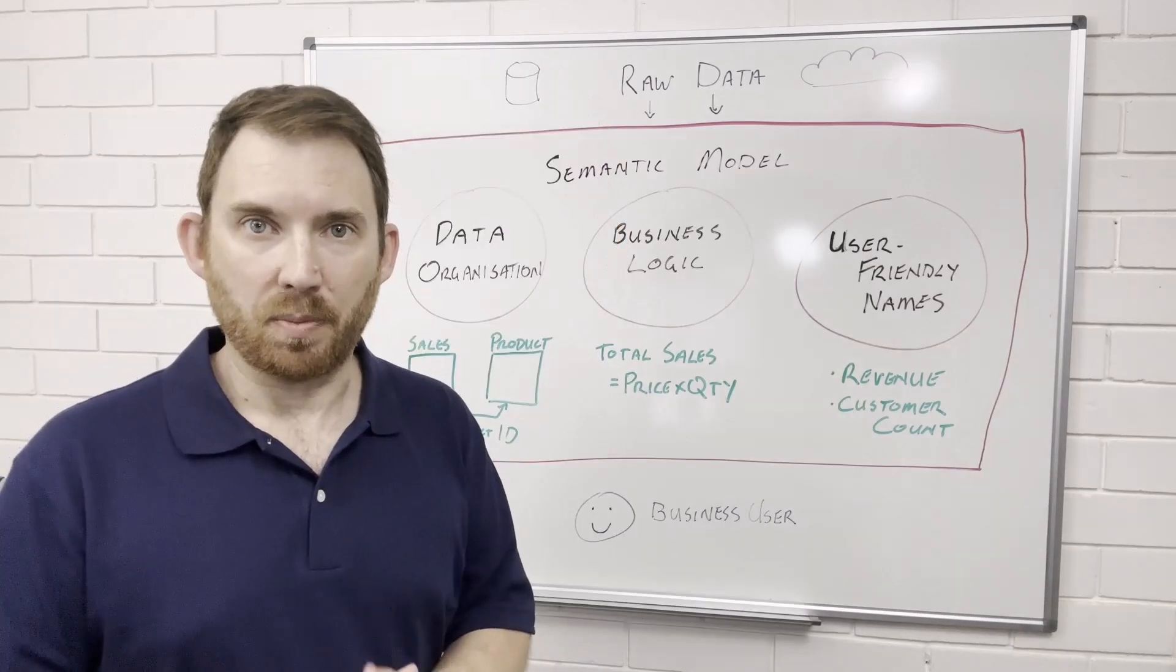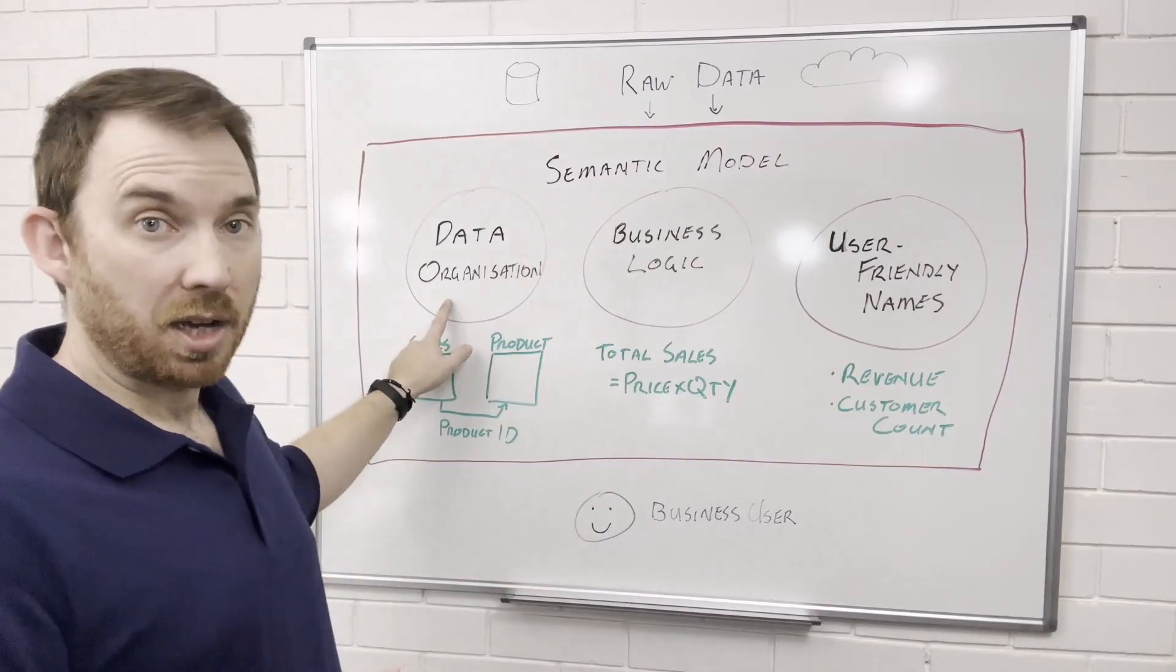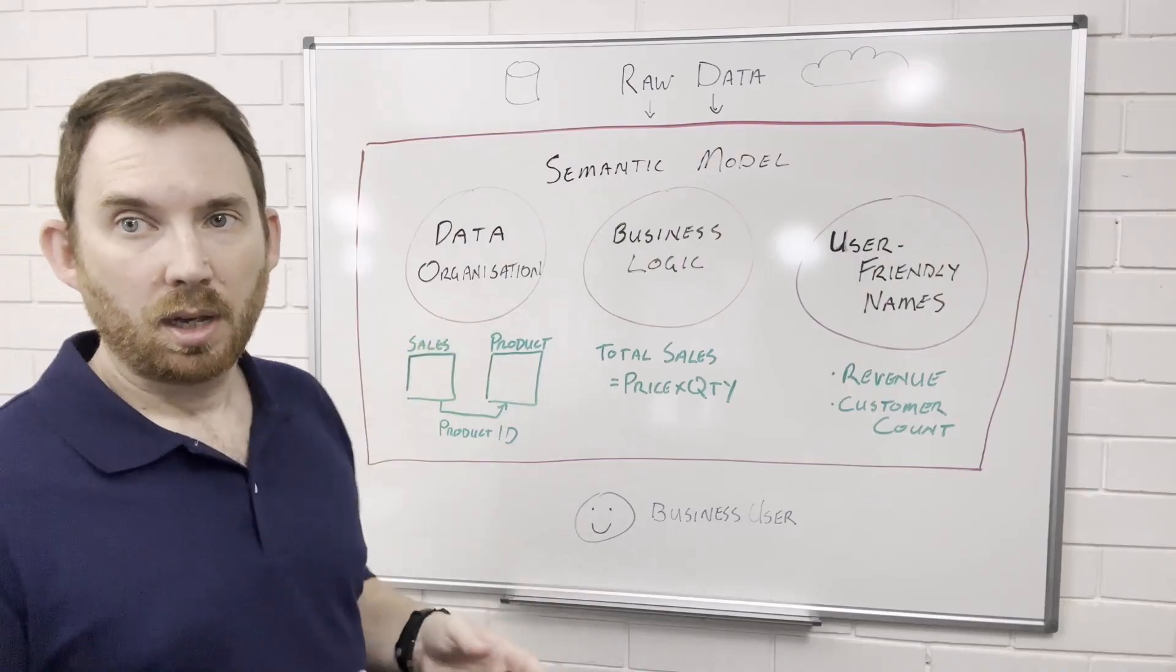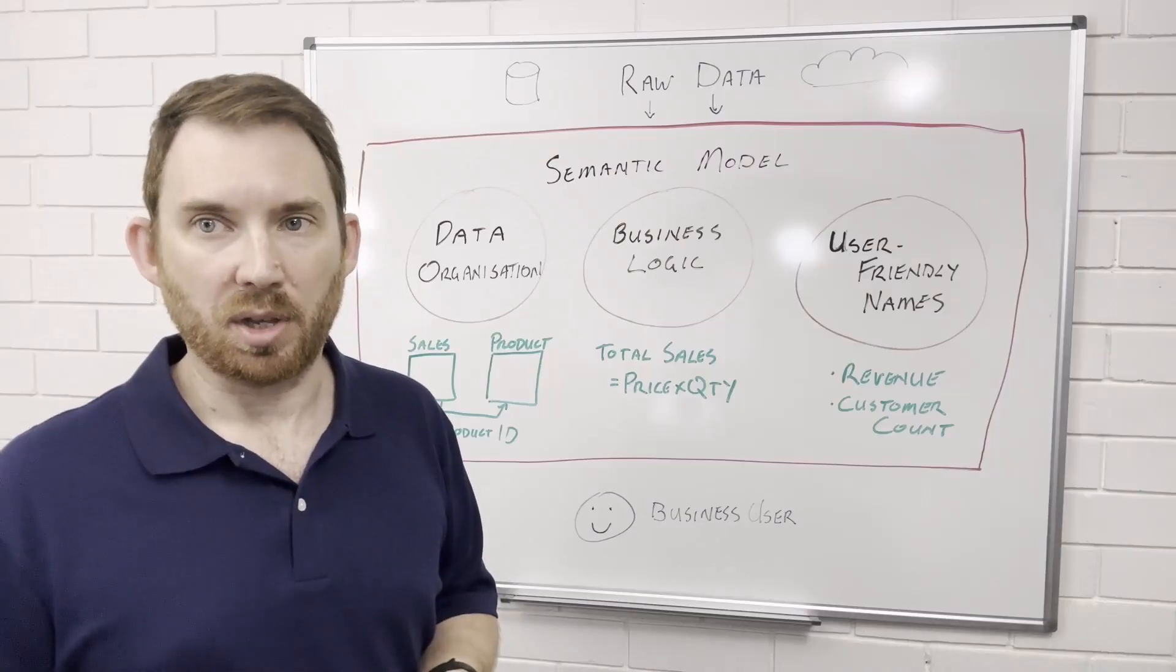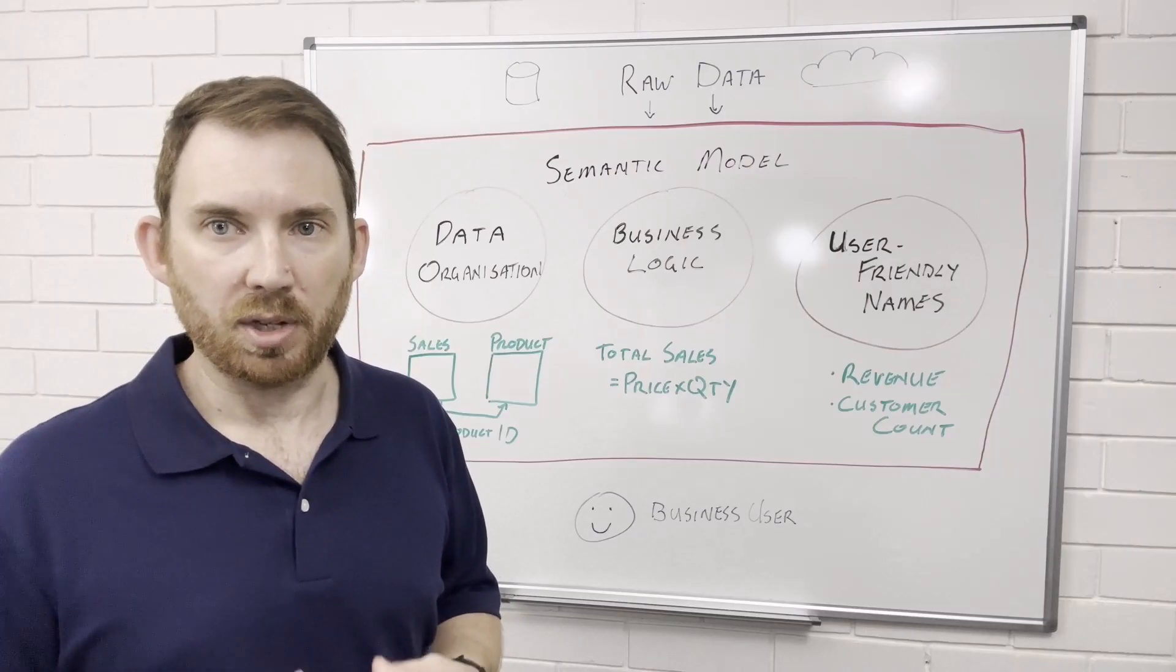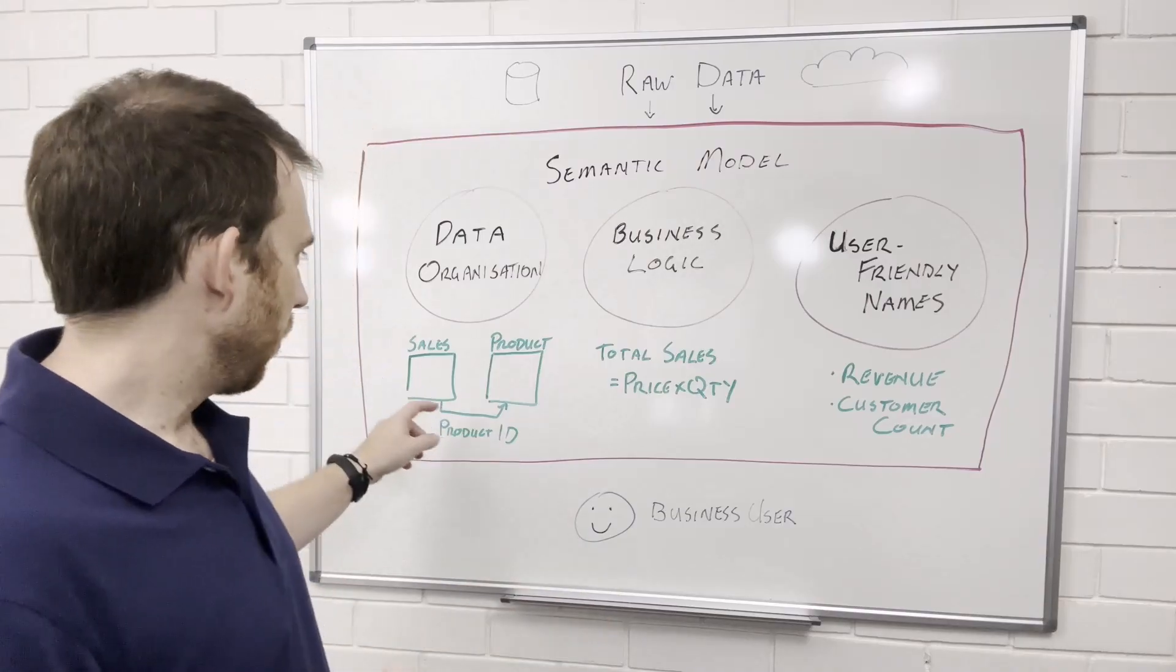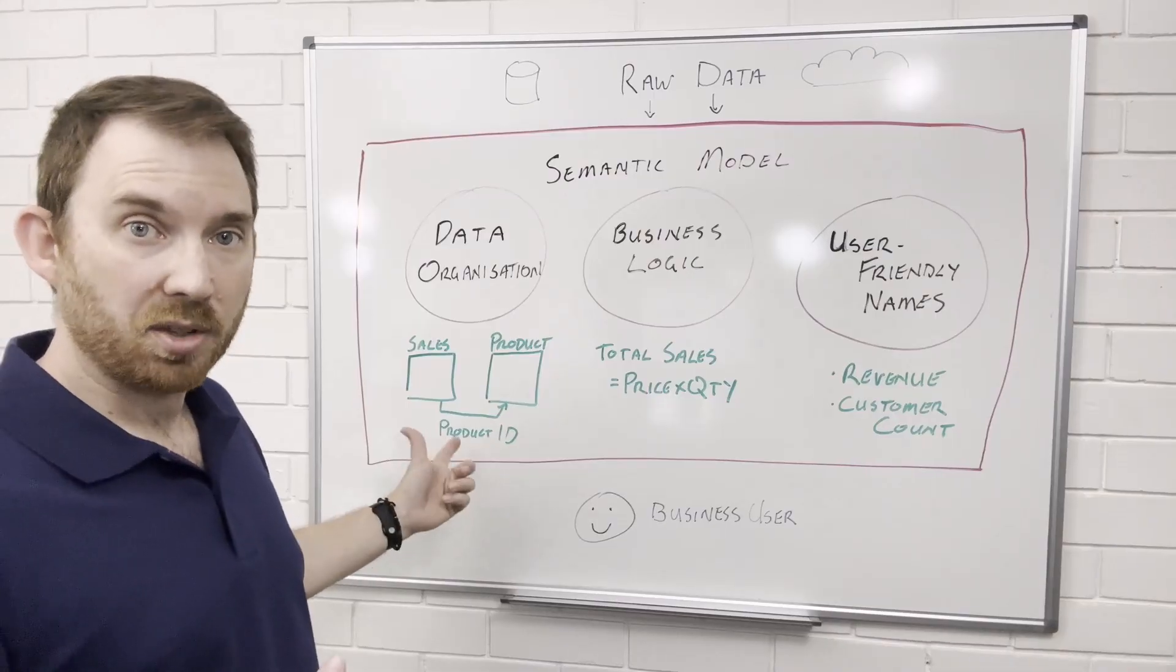Let's see what a semantic model does. First is data organization. It organizes raw data into meaningful tables and defines how they relate to each other. Think of it like creating a map so you can navigate your data easily. For example, linking sales and product tables through a product ID.